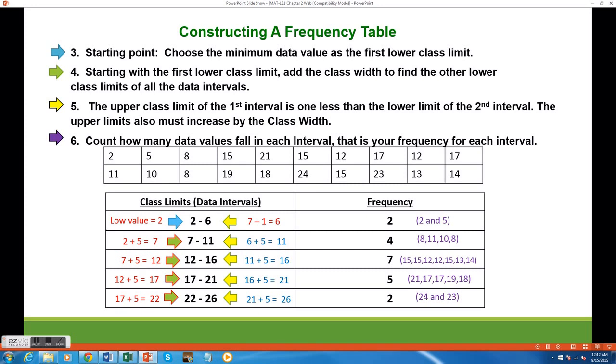The next step is to find the frequency of each class. The frequency of a class is the total number of data values that fall in that range. For our first class, which has a range of 2 to 6, there are only two data values in our table that fall in that range. They happen to be the first two data values in our table, 2 and 5.